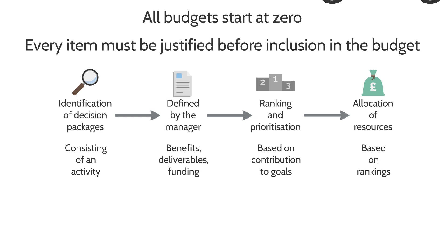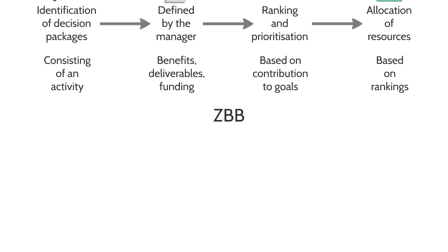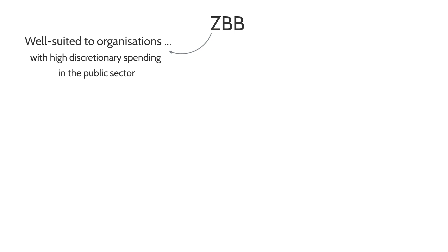So when would an organisation use zero-based budgeting? It's far more useful for organisations with a lot of discretionary spending. For example, a public body that receives a fixed amount of income from the government every single year can't use incremental budgeting — the money is the same as last year. They have to look at the money they have, evaluate the various projects available, and make the most efficient use of that money by selecting the most cost-effective options.